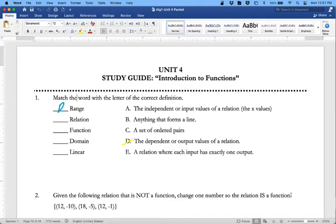Number one, we're looking at range—that is the dependent, so we're gonna put a little D right there. We've got relation, we call that a set of ordered pairs, so that is C. Then we've got a function, and that is a relation where each input has exactly one output—that's E. The independent part, that is the domain.